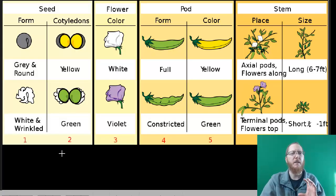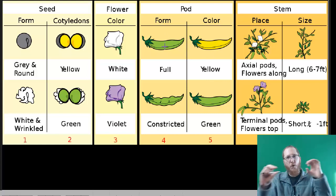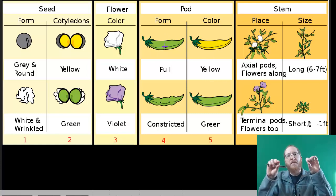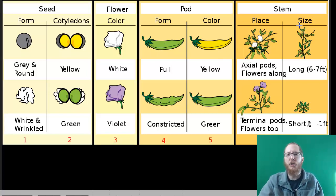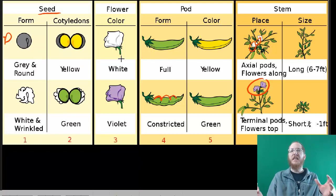Mendel looked at seven different traits in pea plants, each of which had these two possibilities. Going through them quickly, when you look at the actual seeds, the peas themselves, the possibilities were round or wrinkled. They could be yellow or green. Flowers had two different colors, white or purple. The pods themselves could also be yellow or green. And then they could be smooth, inflated, full, or they could be where they're more form-fitting, what we call constricted. And lastly, the stems could be tall or long, or short. And then you can be axial, which just means the flowers are further up the branch, they're not at the tips, versus terminal, which means they're at the actual tips of the plant.